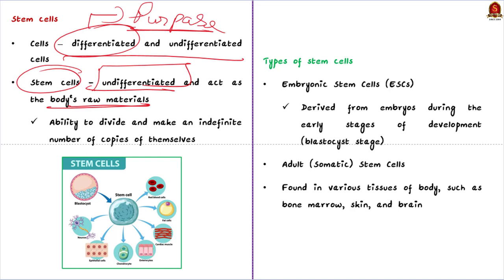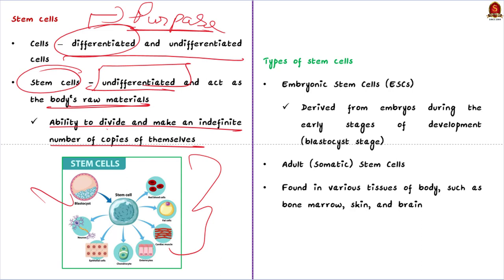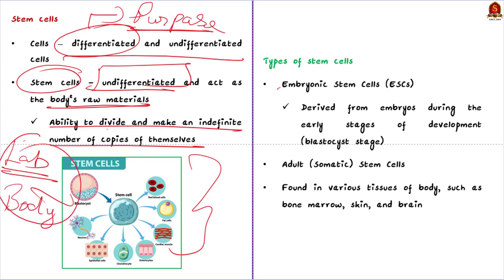Stem cells are undifferentiated and act as the body's raw material — they are the cells from which all other specialized cells are generated. They have the ability to divide and make an indefinite number of copies of themselves. When a stem cell divides, it can either remain a stem cell or turn into a differentiated cell such as a muscle cell or a red blood cell. Under the right conditions in a body or laboratory, stem cells divide to form more cells called daughter cells.